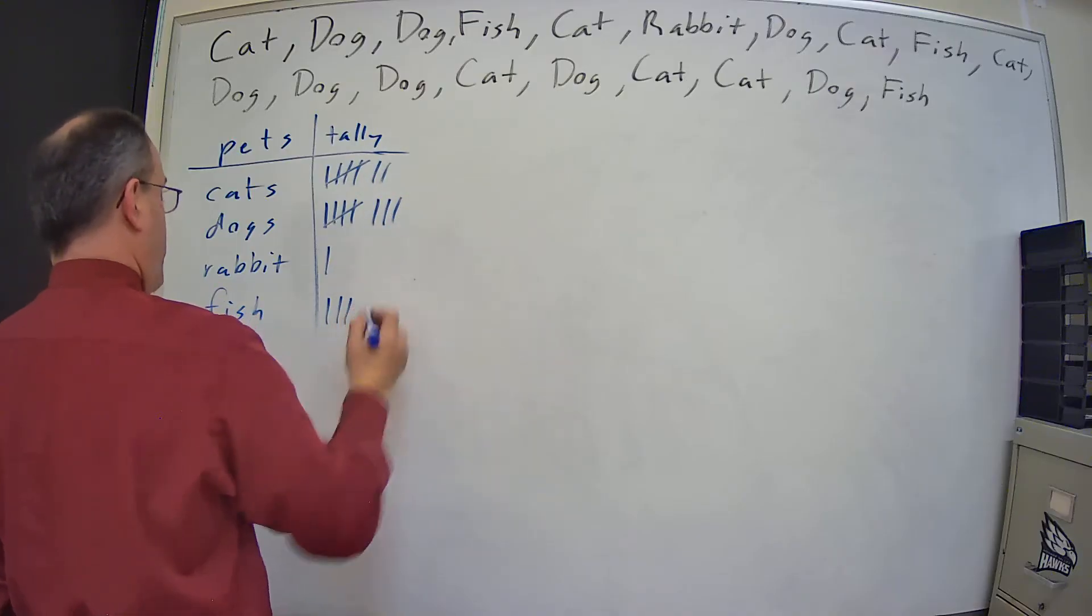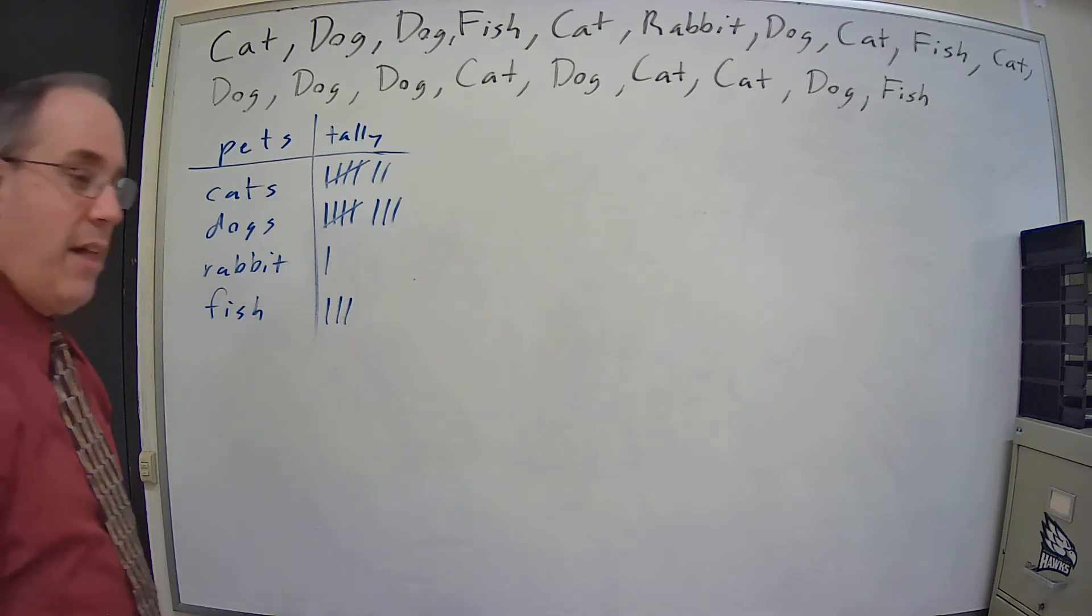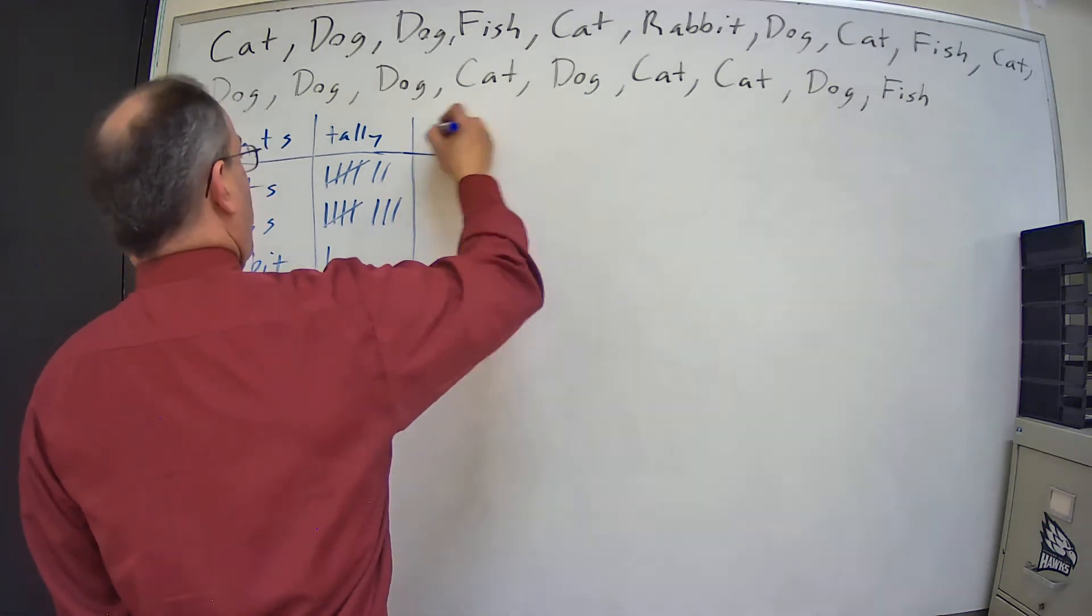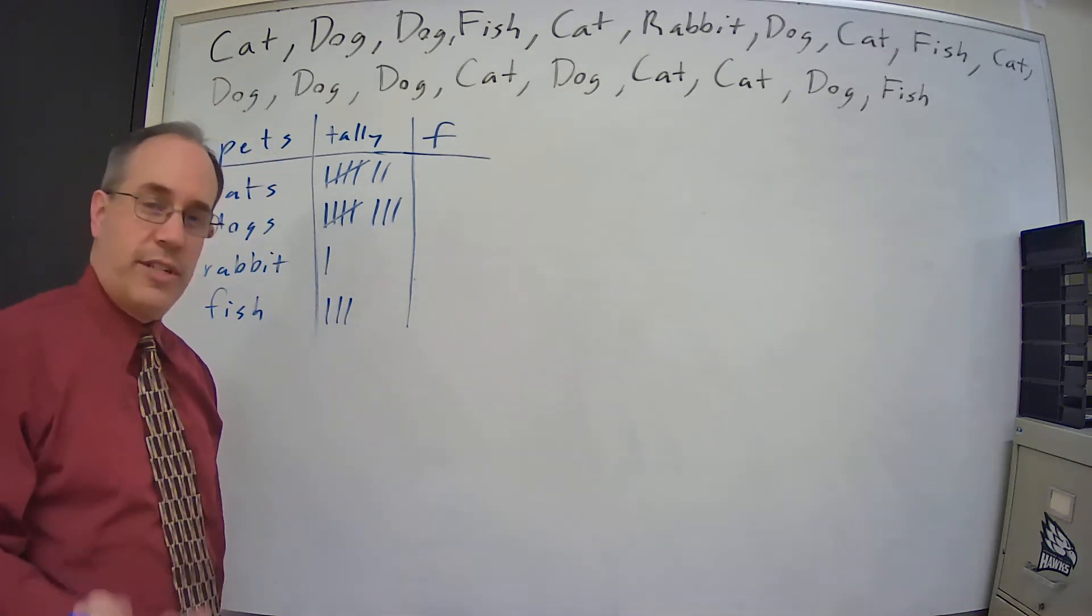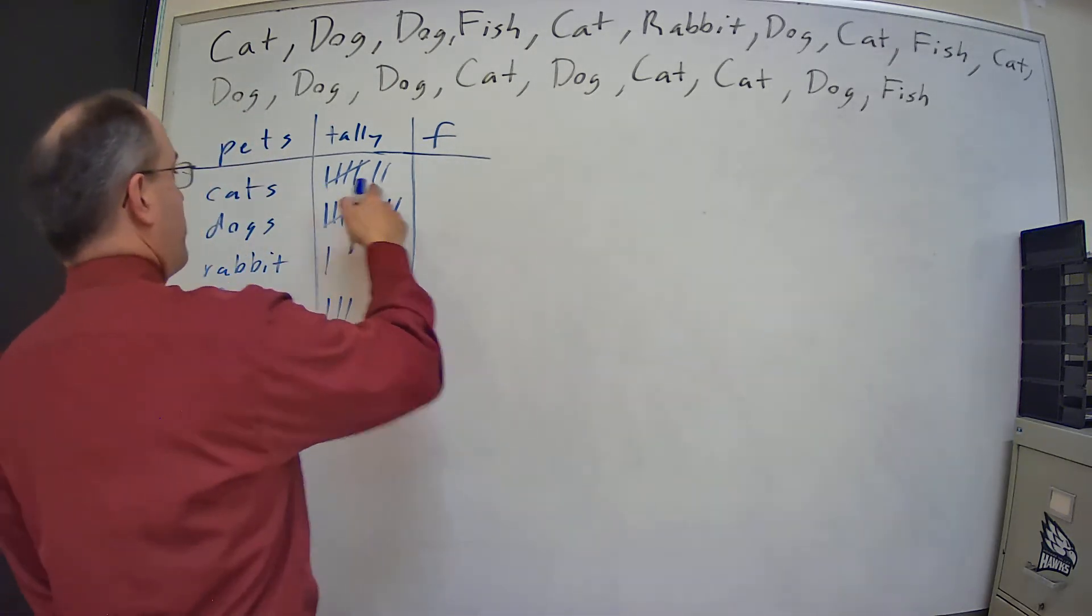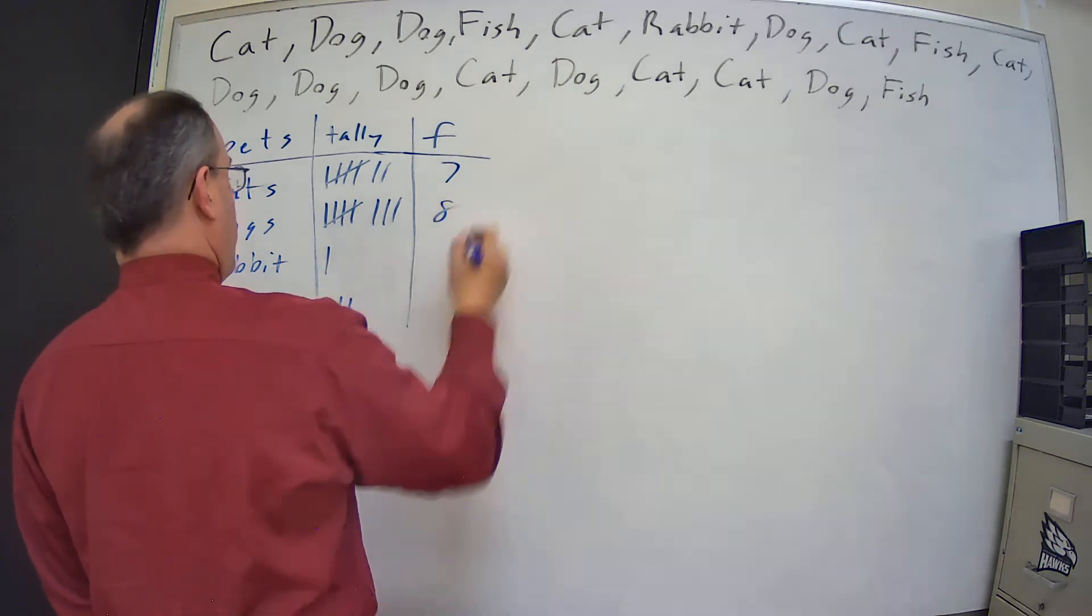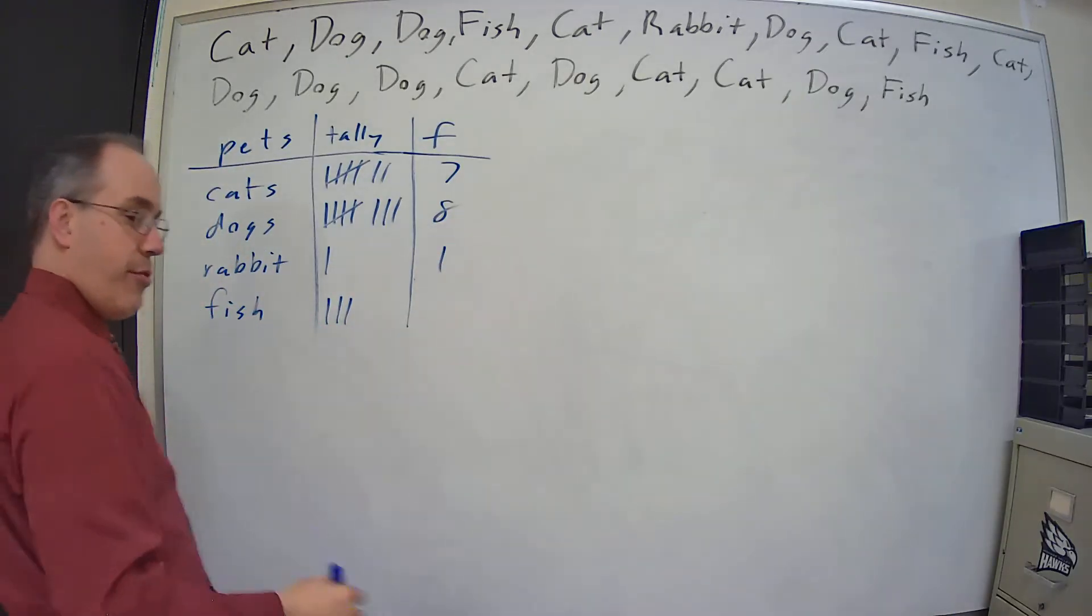So I've got my tally. I can then use that tally to come up with the frequencies. I'm just going to use an F for frequency. So I add those up. I've got seven, here I've got eight, I've got one, and I have three.